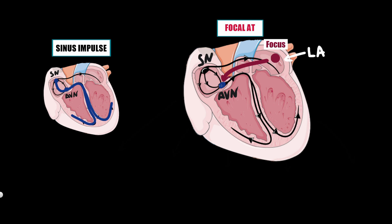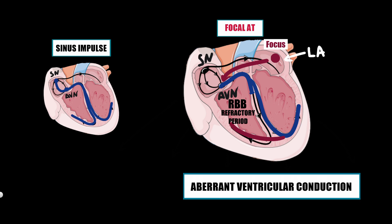Sometimes the impulse from the atria comes so early that some His bundle branches are still in their refractory period. Usually this affects the right bundle branch due to its naturally longer refractory period. As a result, the right ventricle is depolarized after the left ventricle — just like in right bundle branch block — and the QRS complex is wider with right bundle branch block morphology. This condition is called aberrant ventricular conduction. Aberrancy with left bundle branch block morphology can also occur, but is less common.